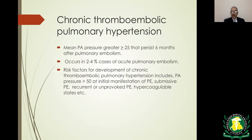Chronic thromboembolic pulmonary hypertension is defined as persistence of elevated pulmonary pressure three months after effective anticoagulation following acute pulmonary embolism. It develops in about 2 to 4 percent of cases due to incomplete resolution of pulmonary embolism, leading to increased resistance to blood flow. It is more likely in patients with pulmonary artery pressure of 50 or more at the time of PE, and in cases of submassive, massive, or recurrent PE.